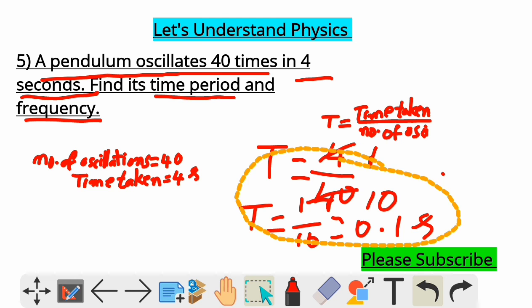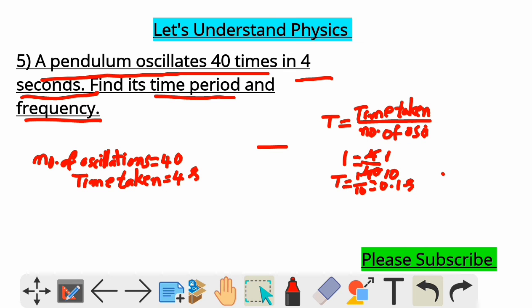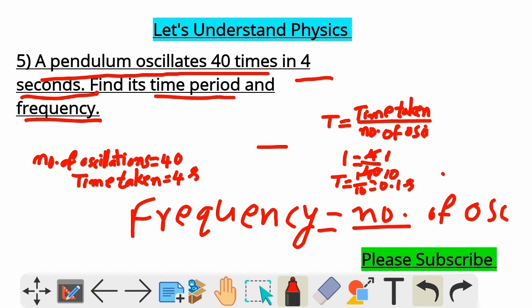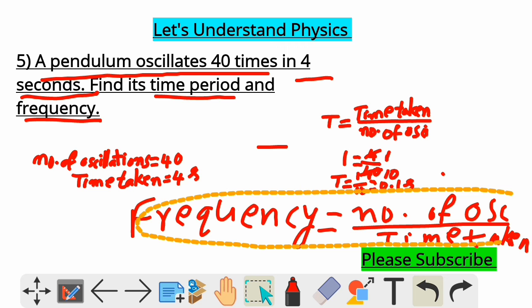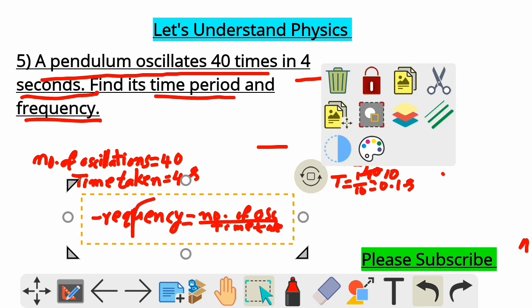Now, not only time period. They are asking you to find frequency as well. That also we have to find. Now, write frequency formula. What is frequency formula? Same, isn't it? But numerator and denominator will be changing. Frequency is equal to number of oscillations by time taken. Don't get confused. Number of oscillations by time taken. We will simply substitute in this formula also.